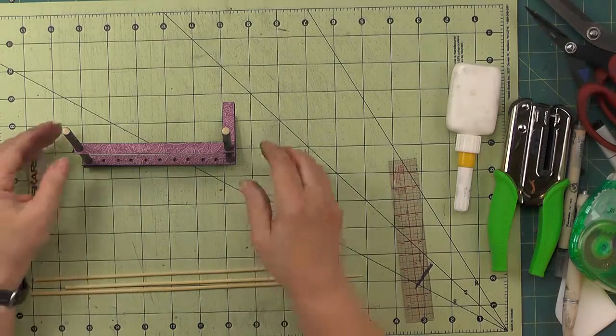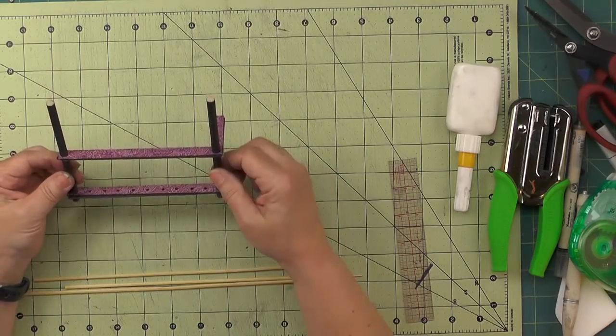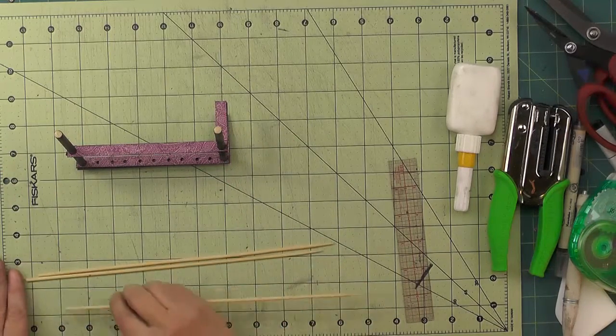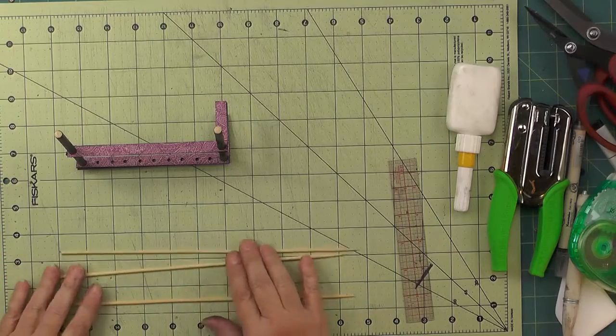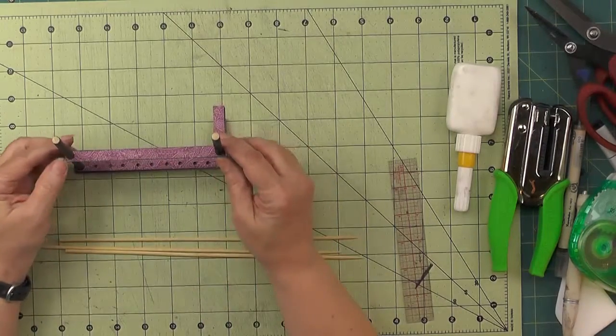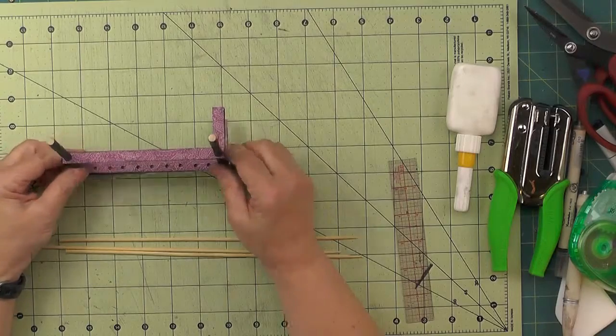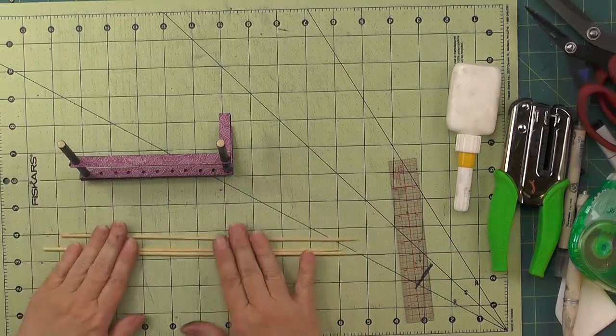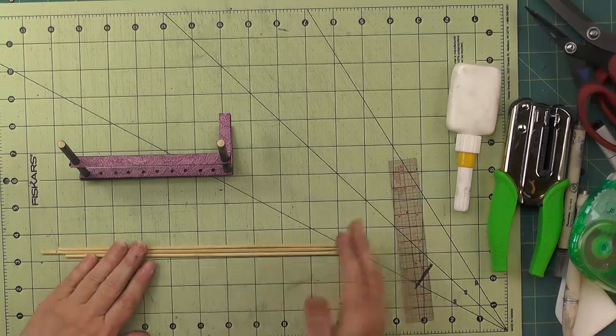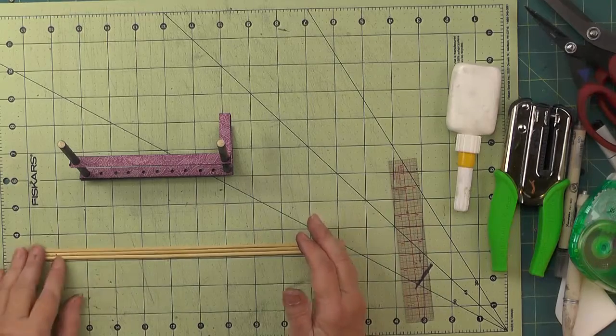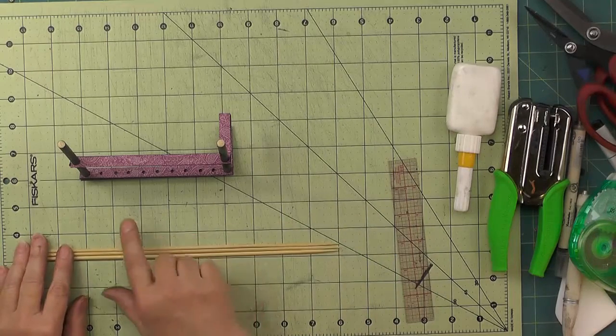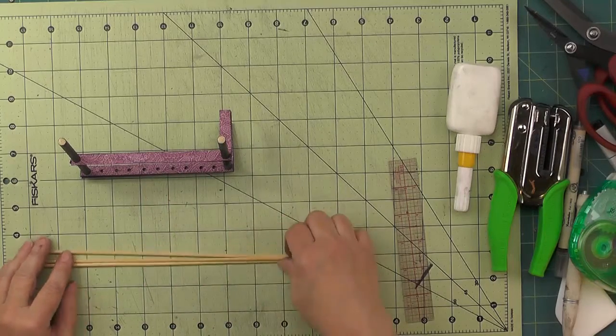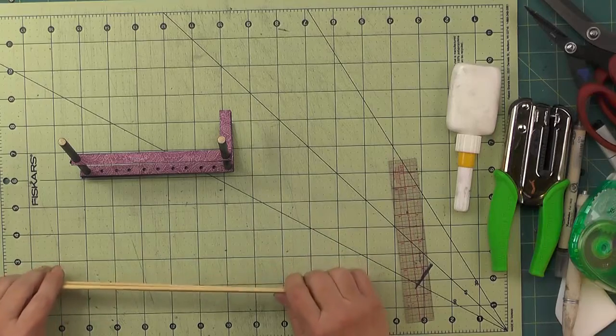Now we have our railings assembled. I've got some eighth inch dowel here that I'm going to color with my Copic marker. I think I'm going to have my spindles be about an inch and a half tall. So I'm going to color all of those and then cut them as accurately as possible into inch and a half lengths. We need eleven of them.